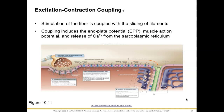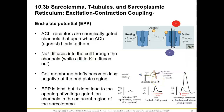We are in the phase of excitation-contraction coupling — we need to stimulate our fiber, which will be coupled with the sliding filaments in a moment. Coupling is going to include an end plate potential or EPP, a muscle action potential, and release of calcium from the sarcoplasmic reticulum. We'll walk through all of these phases.